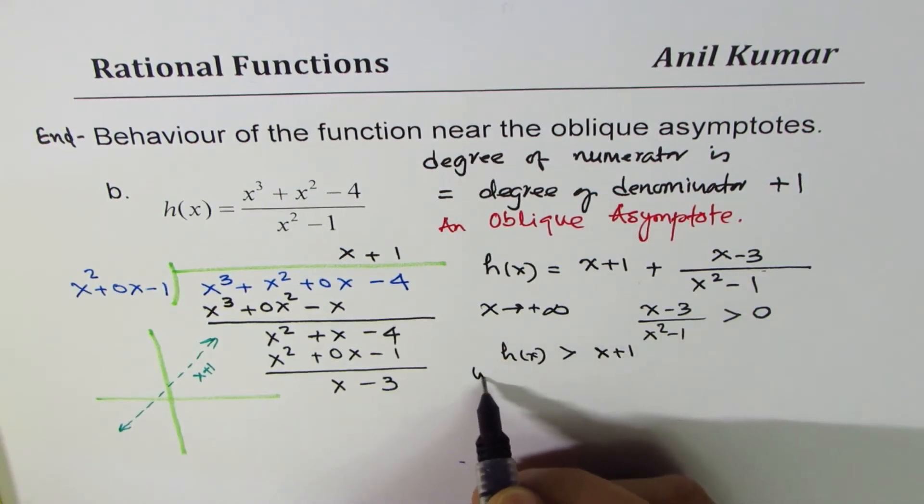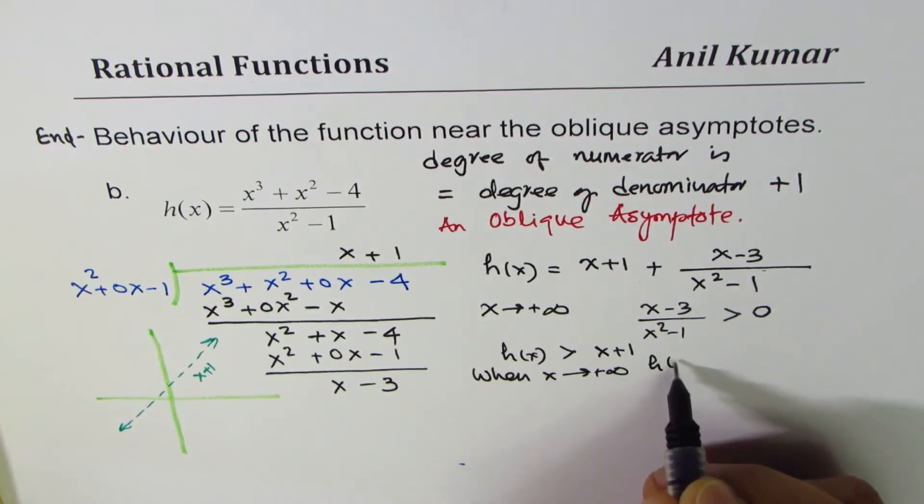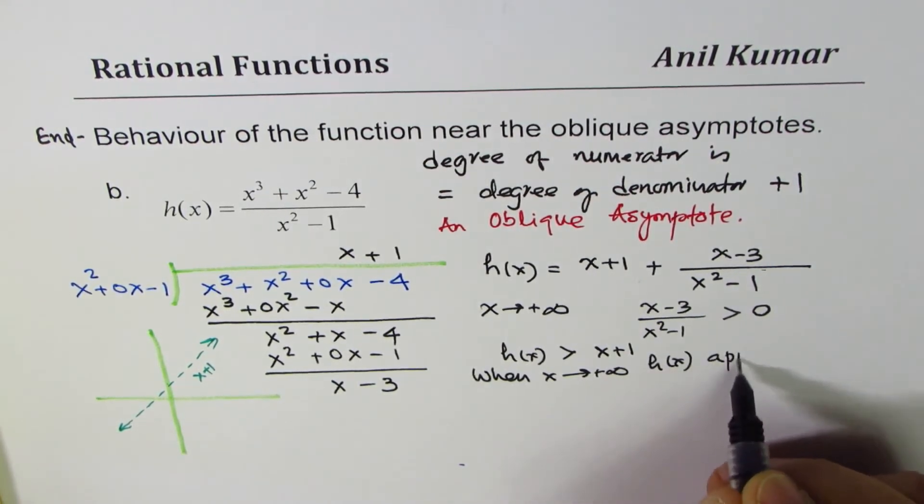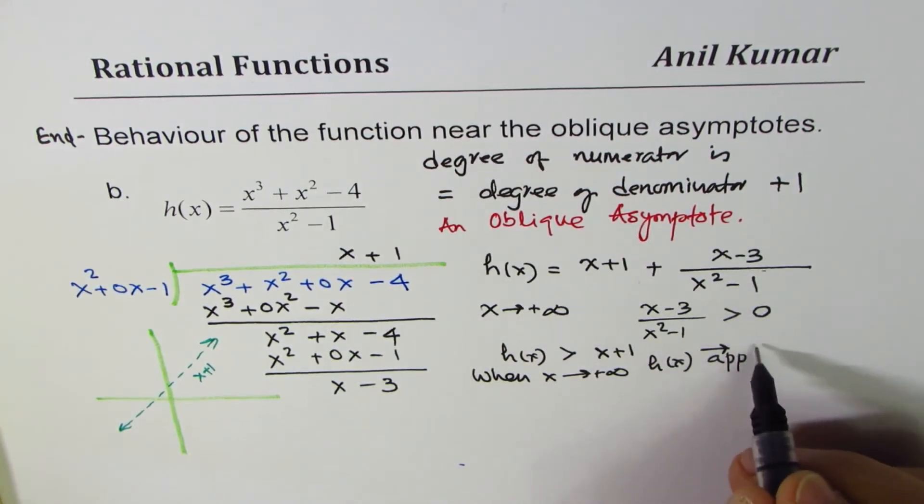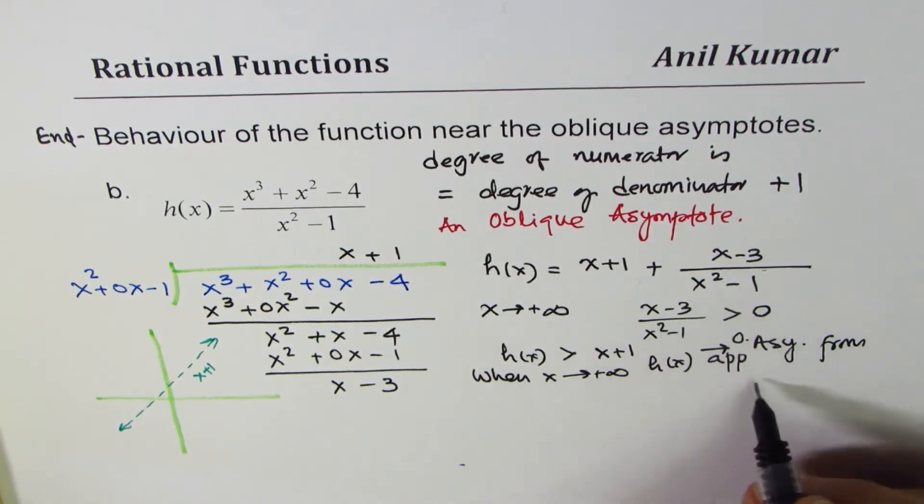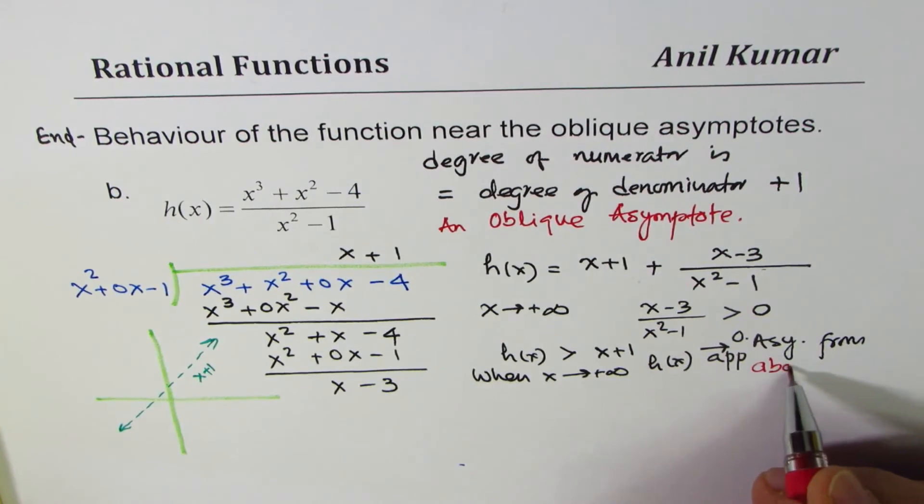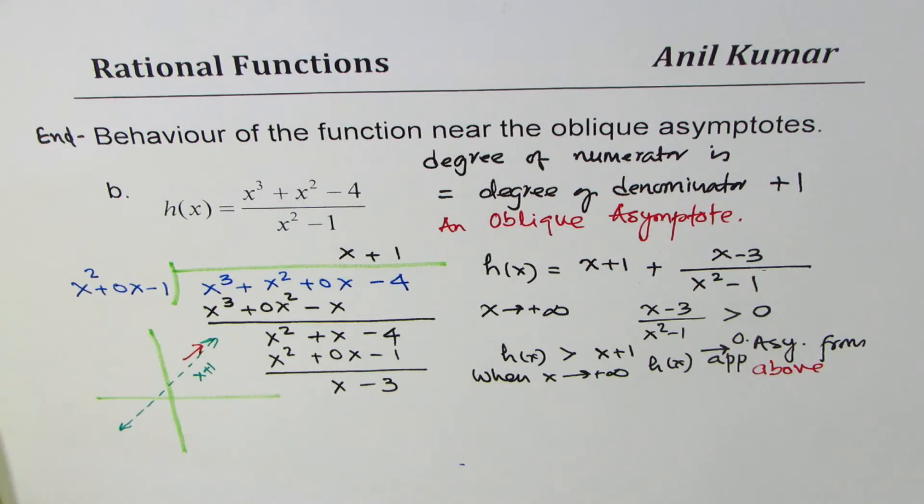Therefore, h(x) is greater than x plus 1. We can say when x approaches positive infinity, h(x) approaches asymptote x plus 1, oblique asymptote, from above. Since this is greater, from above. That is the critical thing. That means kind of like this. From above.